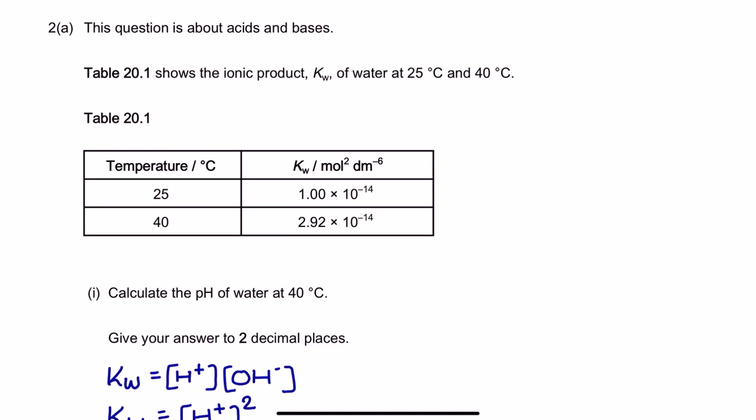The next question I selected is going to be using KW in calculation, and we can see we've been given two different values of KW. On your datasheet in the exam, you have this one already, which is 1 times 10 to the power of minus 14, and that's the KW at room temperature, 25 degrees C. What we don't always get though is this value, which is at 40 degrees C, and that's 2.92 times 10 to the power of minus 14. Here you can see, just like we mentioned earlier in the tutorial, that the KW value is increasing with increasing temperature, and the question is going to get us to use this value at 40 degrees C in some calculations.